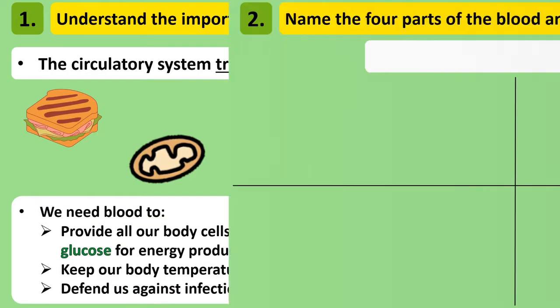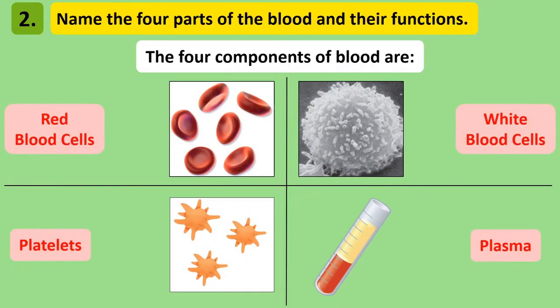So what can we find in the blood that allows us to do all these things? Blood is composed of four parts: red blood cells, white blood cells, platelets and plasma.